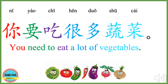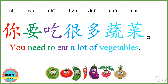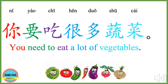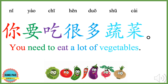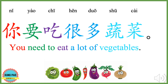你 means you. 要 here means need to. 吃 means to eat. 很多 means many or a lot of. 蔬菜 means vegetables. 你要吃很多蔬菜 — You need to eat a lot of vegetables.